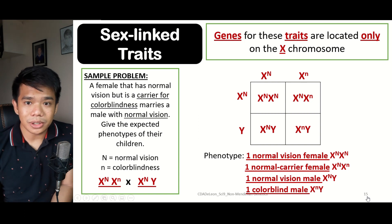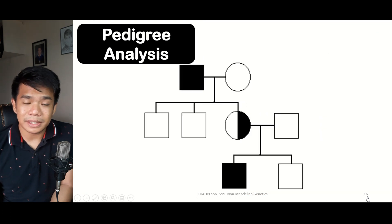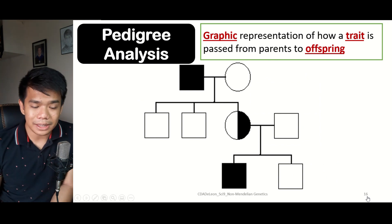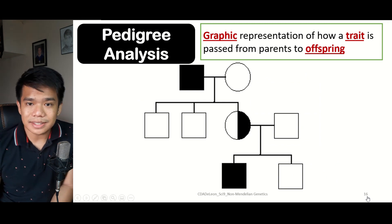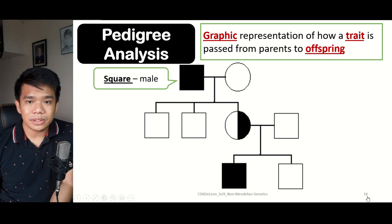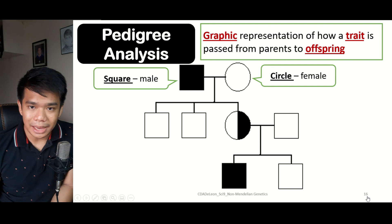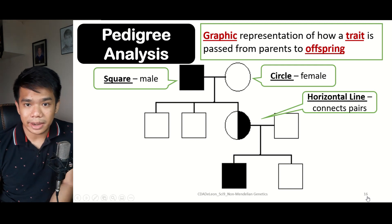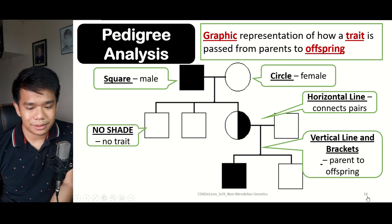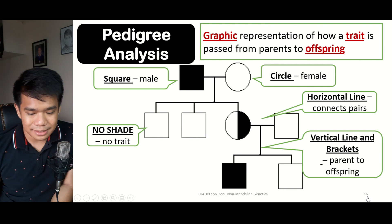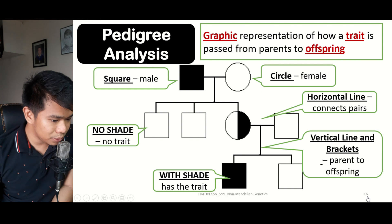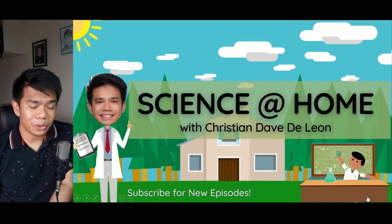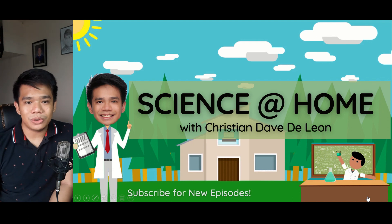Sex-linked traits are mostly recessive in nature. To determine whether a trait is dominant or recessive, it can best be represented through pedigree analysis — a graphic representation of how traits are passed from parents to offspring. It uses shapes and lines: a square represents a male, a circle represents a female, a horizontal line represents a marriage, and vertical lines with brackets represent parent-to-offspring relationships. No shading means no trait, full shading means the trait is present, and half shading means the individual is a carrier.